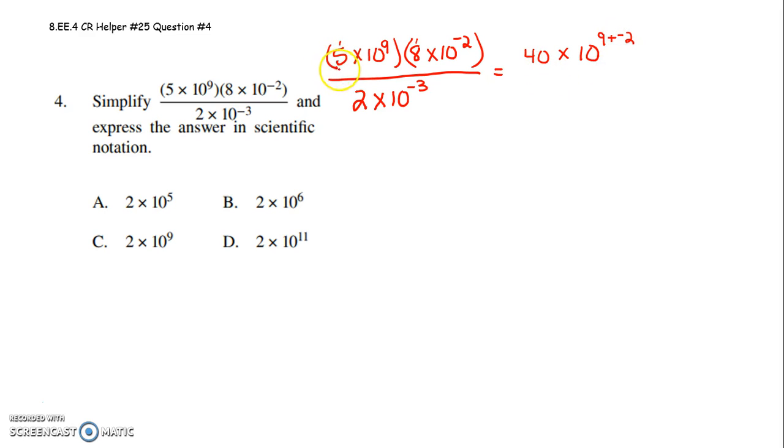So you multiply those first factors. That got me to 40. Then I keep my base of 10, and I add those exponents. Still all over 2 times 10 to the negative 3rd. So in my numerator, I have 40 times 10 to the 9 plus negative 2 is 7th, over 2 times 10 to the negative 3.